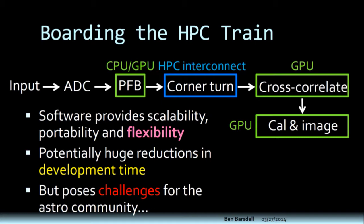What we're looking at doing is moving away from FPGAs and all the firmware and hardware-type designs to a completely software design. What we really want to do is an all-GPU, all-the-time implementation — putting the filter bank and channelization on the GPU as well, using not an Ethernet connection but an off-the-shelf HPC interconnect that we can basically make someone else's problem to install for us, then GPU cross-correlation, and potentially even GPU calibration and imaging in the future. This approach provides a lot of scalability and portability, and very importantly, flexibility. You can change software so easily that it makes a big difference when you want to add features down the line. Reduced development time is very important, but there are also a lot of challenges because the astronomy community is not used to working with HPC-like systems.